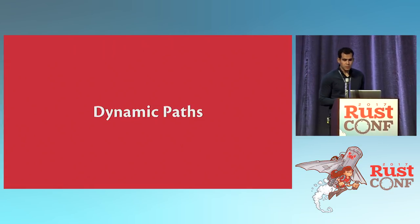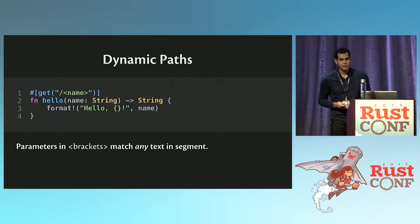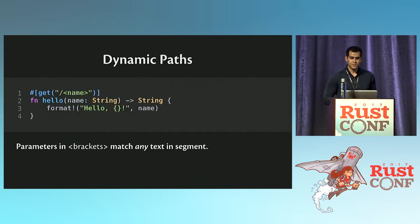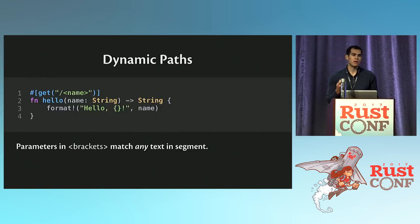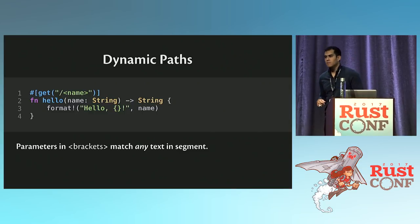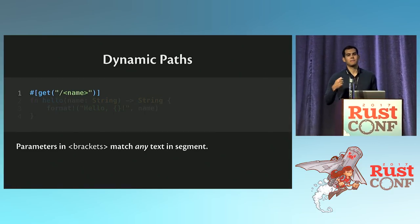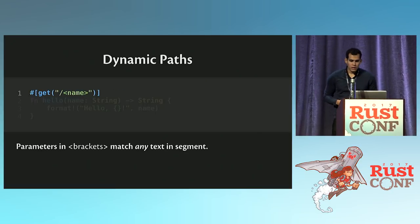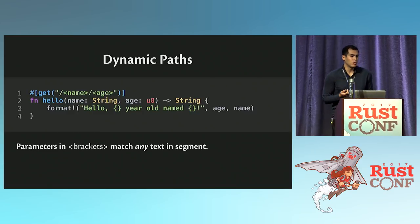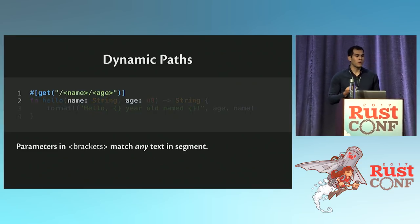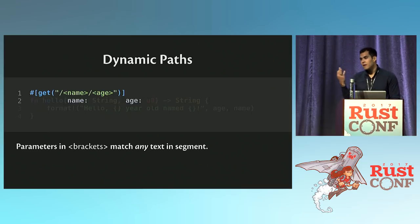I want to talk about dynamic paths. Dynamic paths allow you to have path segments that are dynamic — the user tells you what the value for that path segment is. Here is our reworked Hello World example, and you can see parameters in brackets in the route attribute. `<name>` in brackets makes something dynamic — whatever the user types into the path at that segment will be the value that the name parameter gets. The names of the parameters have to match the names of the function parameters. If not, you'll get a compile-time error telling you these don't match.